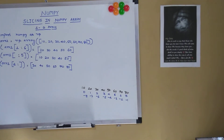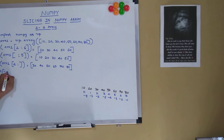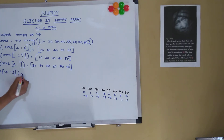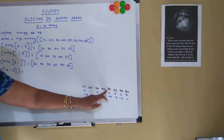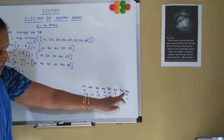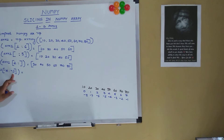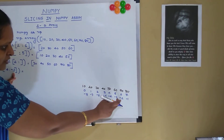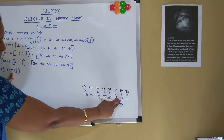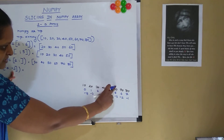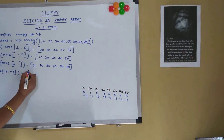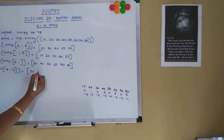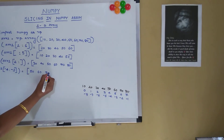Now let's try with negative indexes: array1[-4:-1]. Index -4 corresponds to 50 and index -1 corresponds to 80. Since the stop index is excluded, it ends at -2, giving us elements 50, 60, and 70.